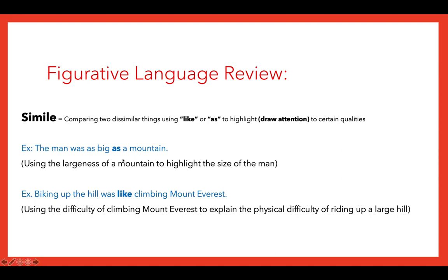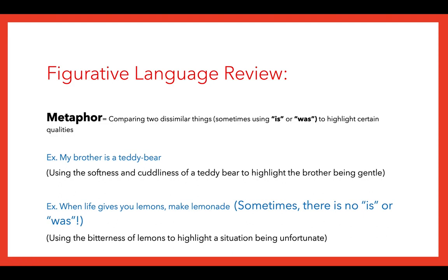Here are quick examples. A simile uses 'like' or 'as': 'The man was as big as a mountain' or 'Biking up the hill was like climbing Everest.' A metaphor uses 'is' or 'was' for a more direct comparison: 'My brother is a teddy bear.' Sometimes a metaphor doesn't use 'is' or 'was,' like 'When life gives you lemons, make lemonade' — that's still comparing two unlike things directly.